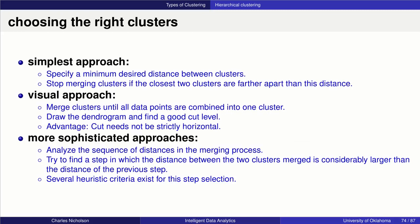With hierarchical clustering, you can specify a minimum desired distance between two clusters and stop merging clusters if the closest two clusters are further apart than this distance. You can also visually inspect the dendrogram and find a good cut level to determine how many clusters you end up with. More sophisticated techniques involve analyzing the sequence of distances during the merging process and trying to find a step where the distance between merged clusters is considerably larger than the previous step. Several different heuristics help with this. The next technique we look at is called density-based clustering, which takes a very different approach to building clusters.